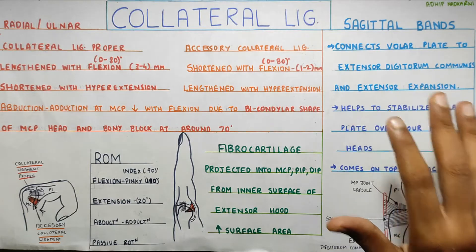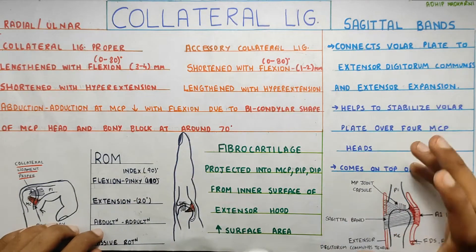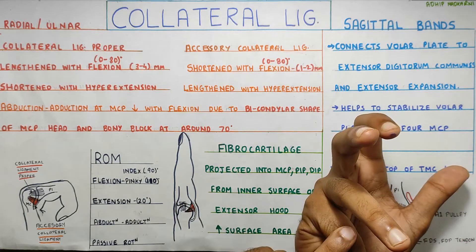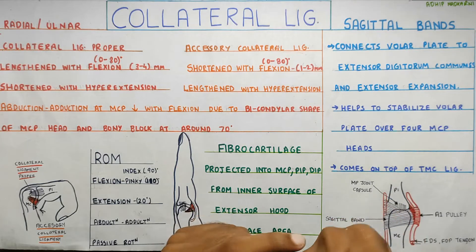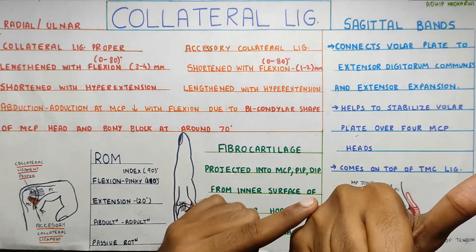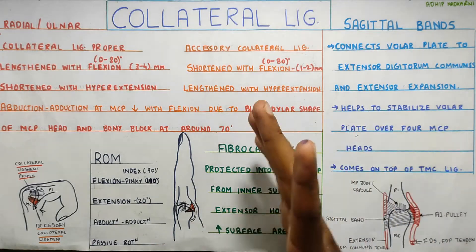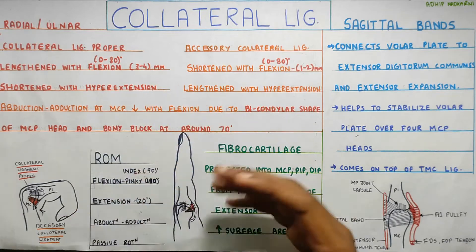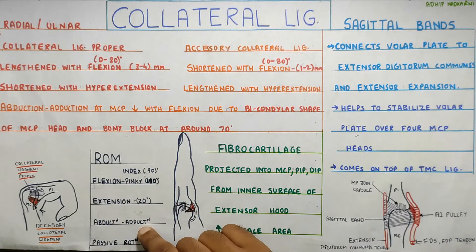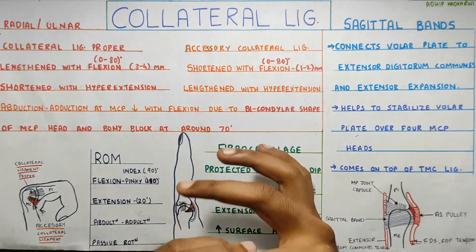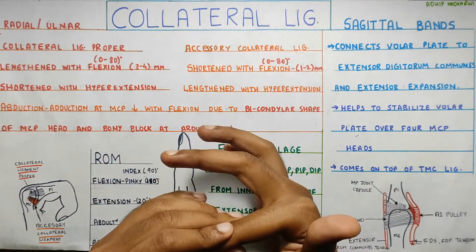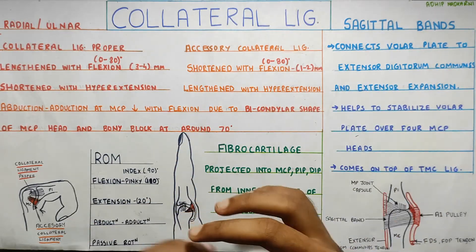Now that we have covered the structure of the metacarpophalangeal joint, let's move on to range of motion. Flexion is around 90 degrees at the index finger, and if you go to the pinky finger it is around 110 degrees — so the range of motion starts increasing from the index to the little finger. Extension is around 20 degrees, but it will vary from person to person and is used to check flexibility depending on ligament laxity. Abduction and adduction increase when the MCP joint is in extension, and in flexion it will be in a closed pack position with a bony block limiting movement.